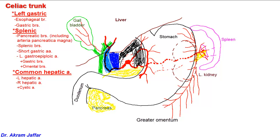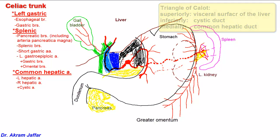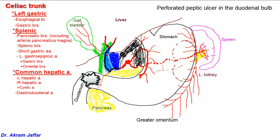The cystic artery has a variable origin and a variable course, but is usually located in the triangular area bounded by the cystic duct, the common hepatic duct, and superiorly by the visceral surface of the liver — this is the triangle of Calot. The common hepatic artery also supplies a branch that passes behind the first part of the duodenum — this is called the gastroduodenal artery. The close relation of the gastroduodenal artery to the posterior aspect of the first part of the duodenum makes it vulnerable to perforation by a perforating peptic ulcer affecting the posterior surface of the first part of the duodenum.